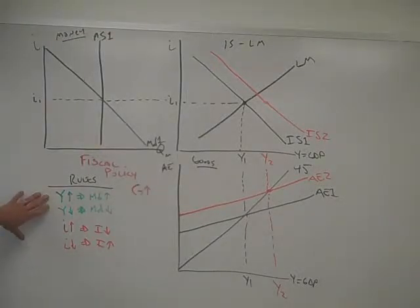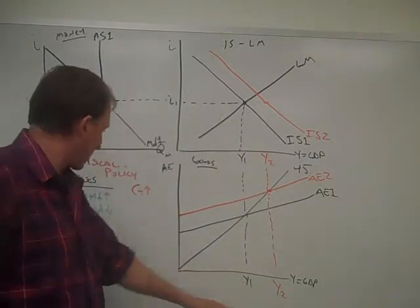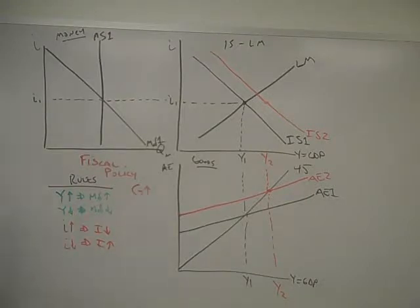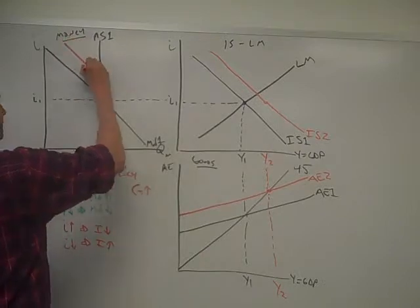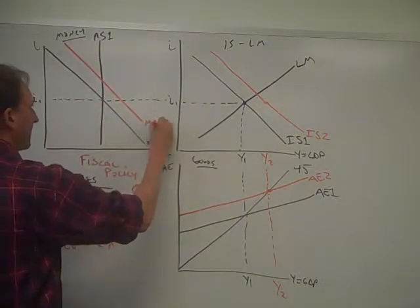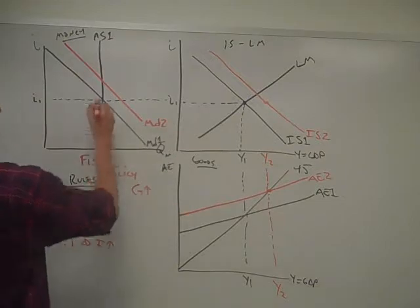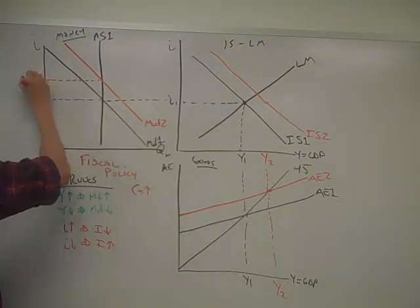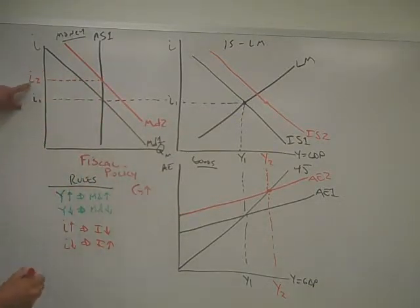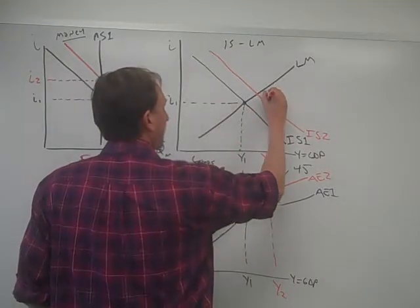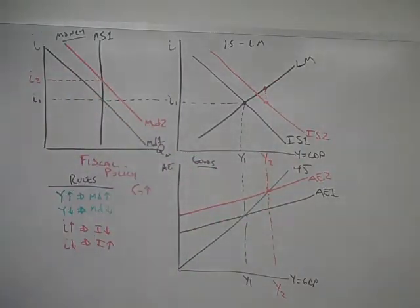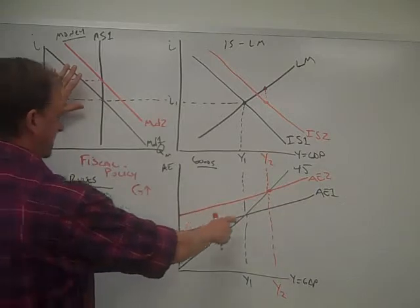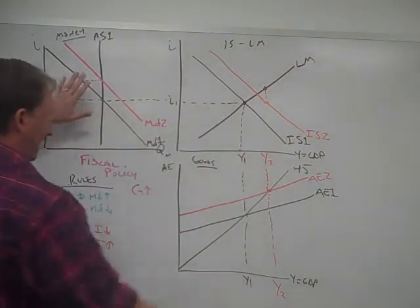What's going to happen? Well, if you need to know what the next step is, just check with your rules because you know Y has gone up. So when Y goes up, MD goes up. So when MD goes up, let's slide MD out. MD goes from MD1 to MD2, and when that happens, I goes from I1 to I2. Interest rates have increased. And then now this dot has shifted to this point on the LM curve.